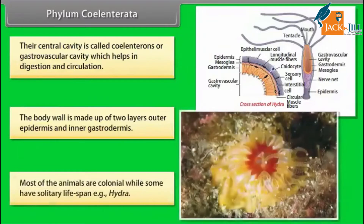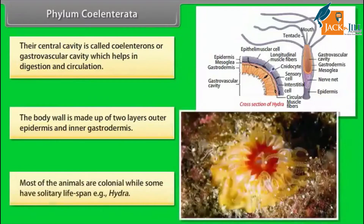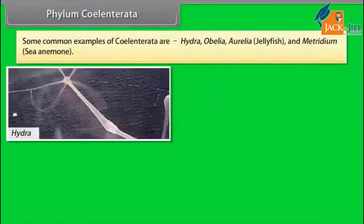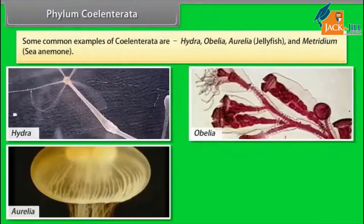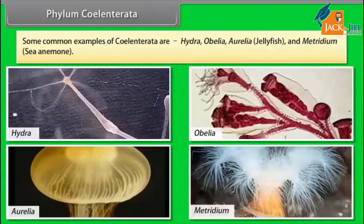Most of the animals are colonial while some have a solitary life span, that is Hydra. Some common examples of Coelentrata are Hydra, Obelia, Aurelia, jellyfish, and Metridium, the sea anemone.